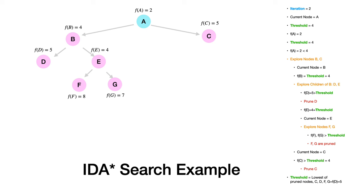Going deeper into B's children D and E: D has F(n) = 5, which is greater than the threshold, so we don't pursue D's children. F(E) = 4, so we pursue E's children F and G. F and G have F(n) values 8 and 7, both greater than the threshold, so we don't pursue further.